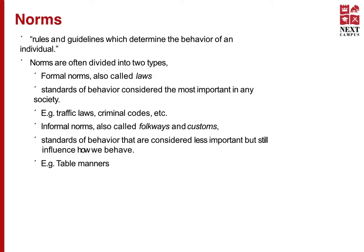Norms are rules and guidelines which determine the behaviour of an individual. Norms are often divided into two types: formal norms, also called laws — standards of behaviour considered to be the most important in any society, such as traffic laws and criminal codes — as well as informal norms, also called customs or folkways. These are standards of behaviour considered less important but still influence how we behave. For example, table manners, like how to use your utensils or how to serve yourself.